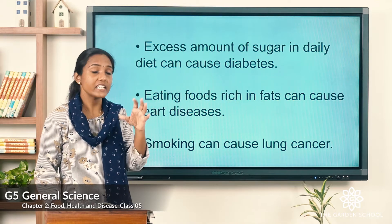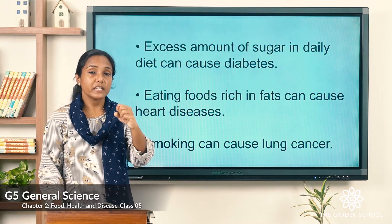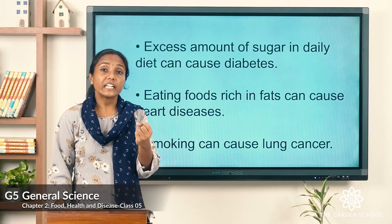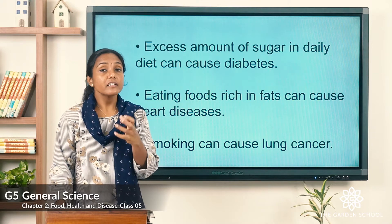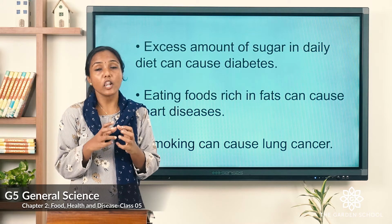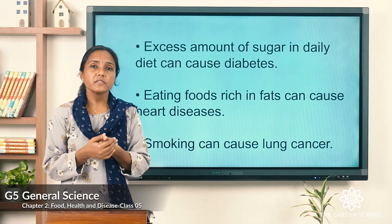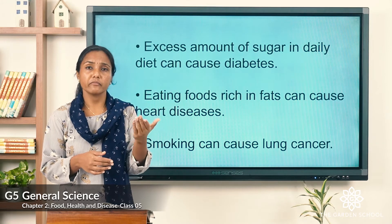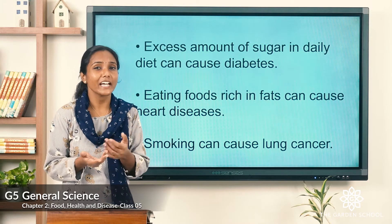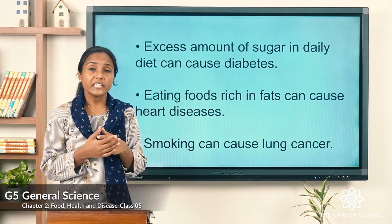Excess amount of sugar in your daily diet can cause diabetes. A person suffering from diabetes has a high level of sugar in the blood. If you are taking diets which contain lots of sugar, then you will get diabetes. Diet matters a lot for non-communicable diseases. Diabetes either comes as hereditary — if our parents have it, children can also get diabetes — or it is due to our lifestyle and eating habits.